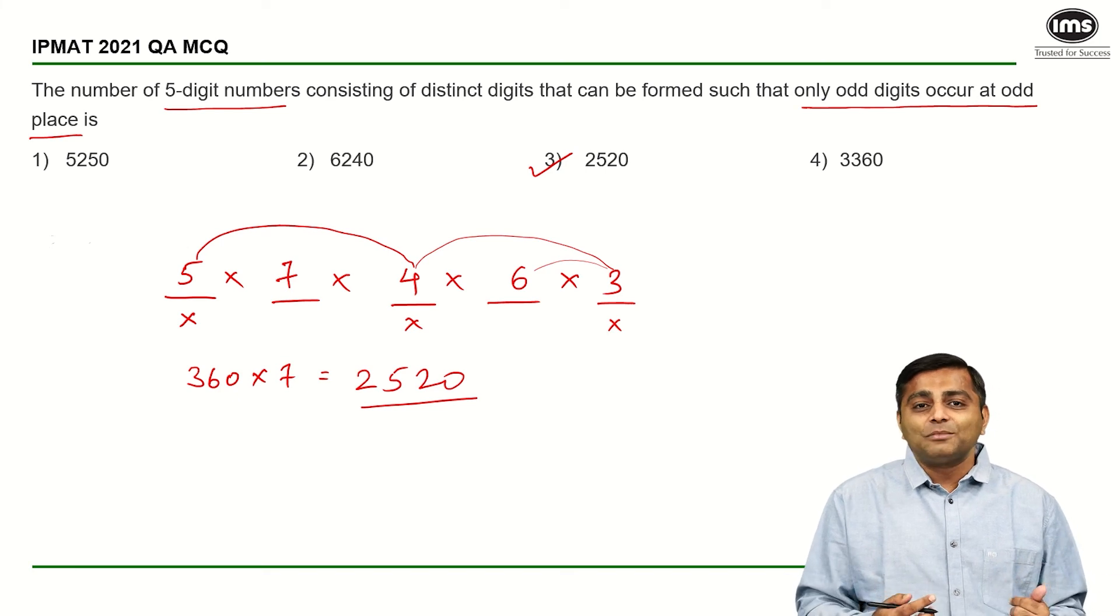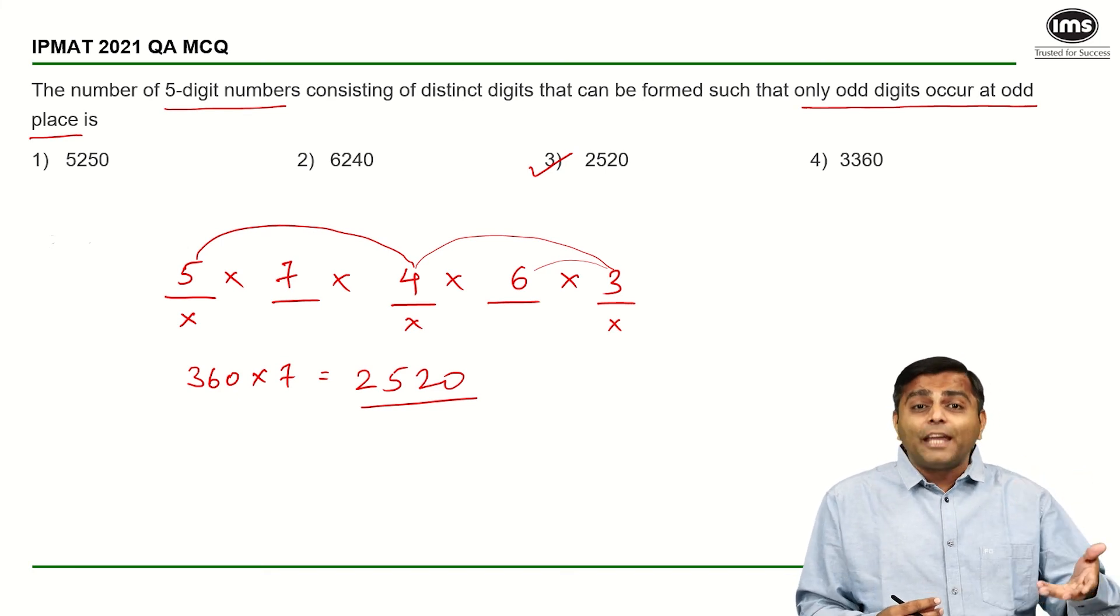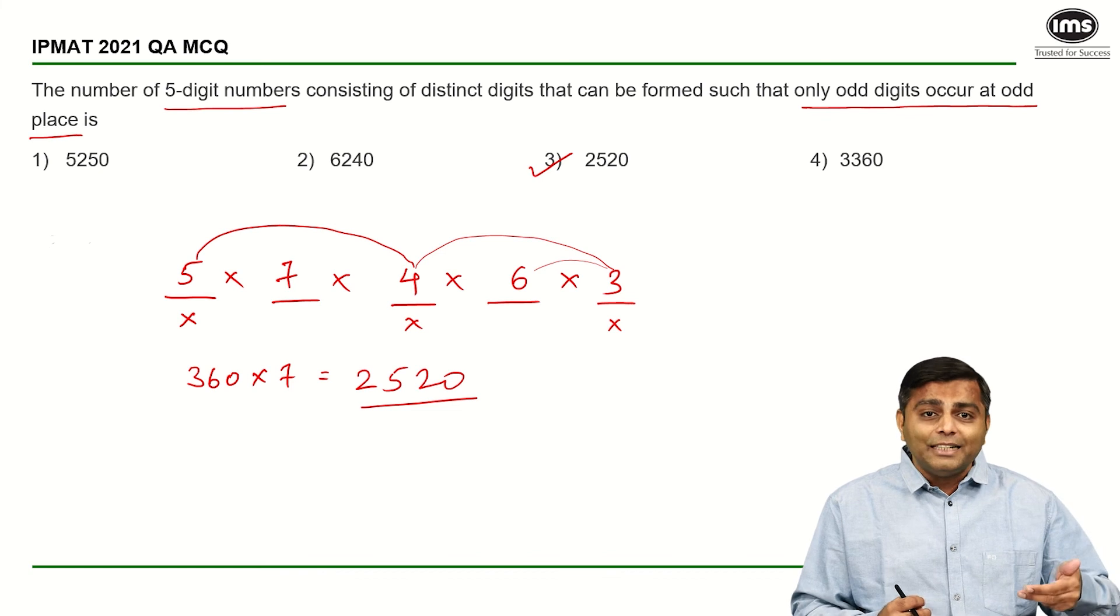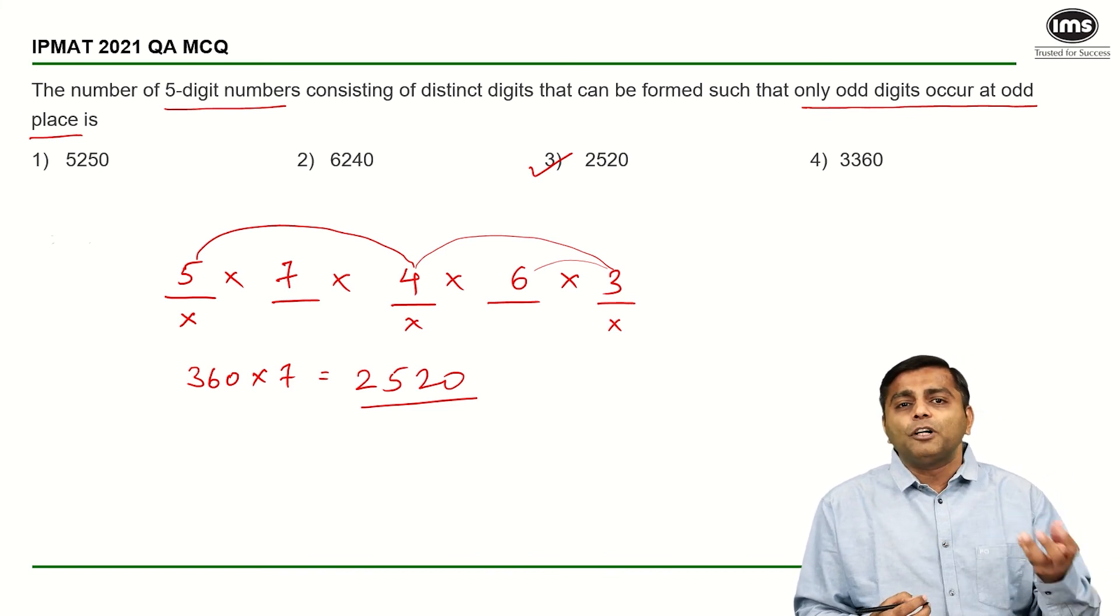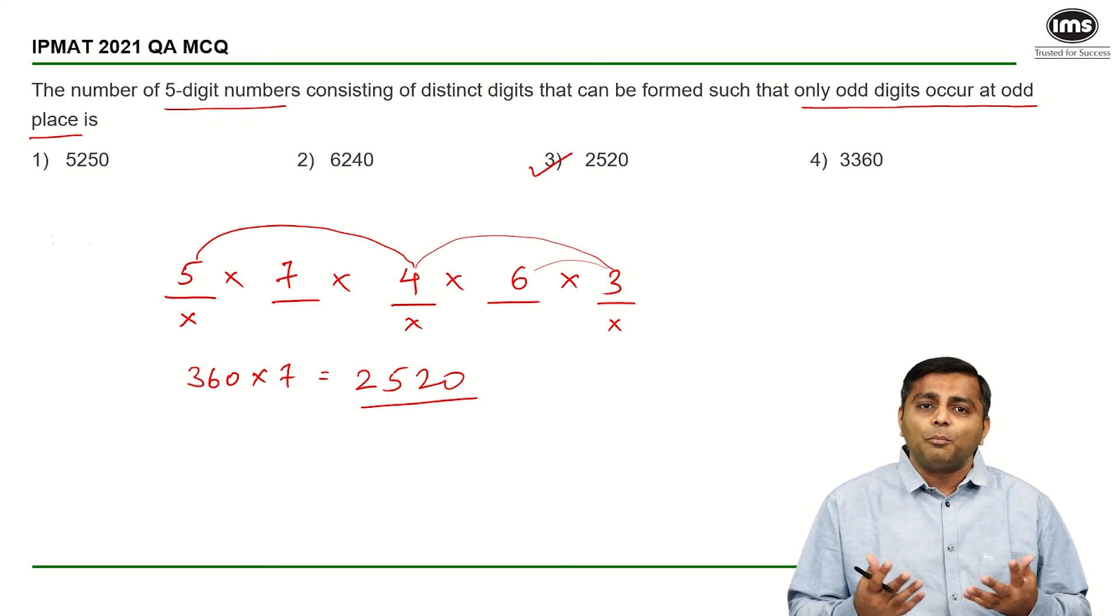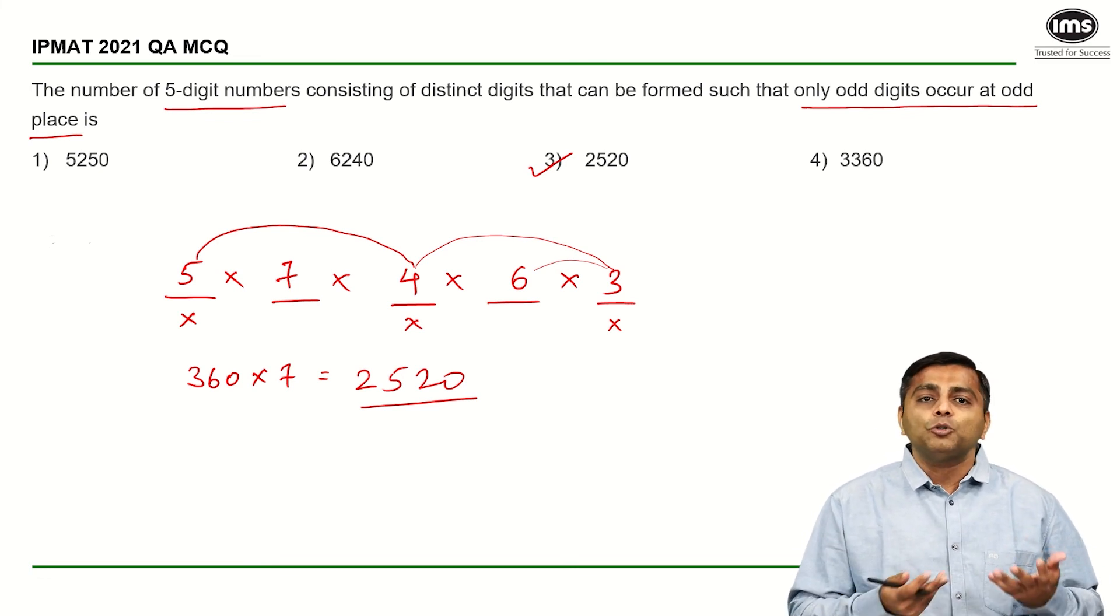So yeah, it's as simple as it comes. So in spite of it belonging to a chapter which is not really simple, the question by itself was not very difficult. So you know, if you do even the first few concepts of permutation combination chapter, you should be able to do these questions.